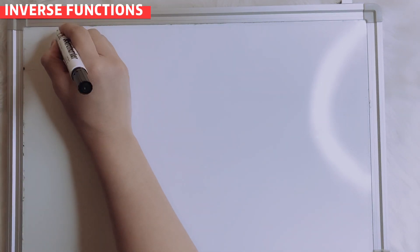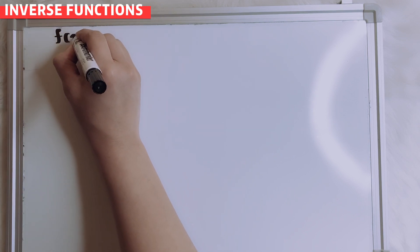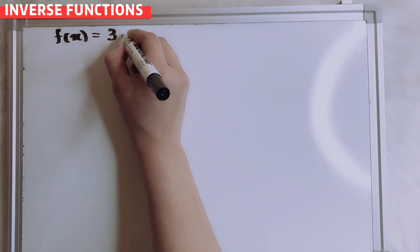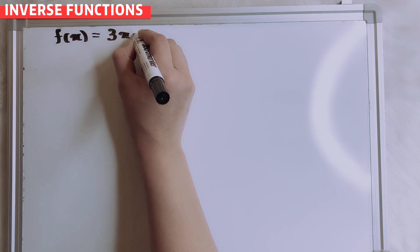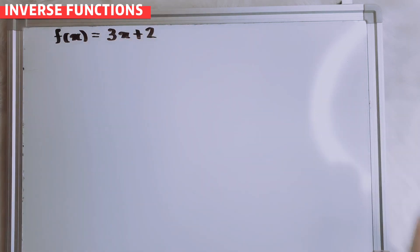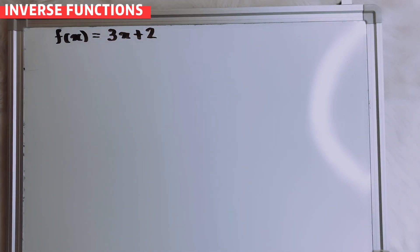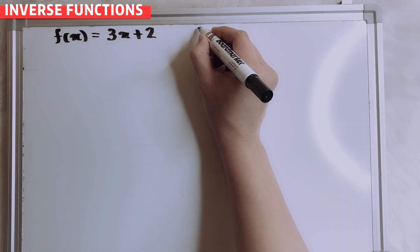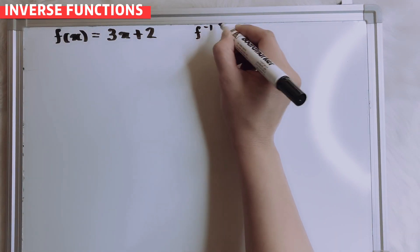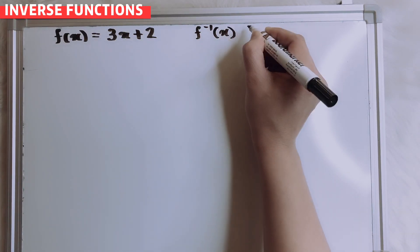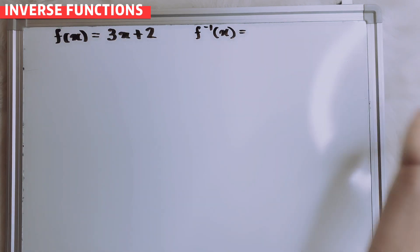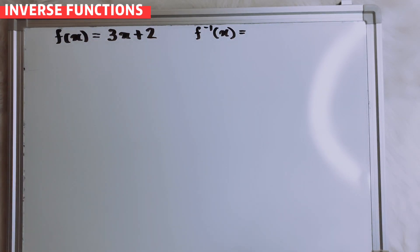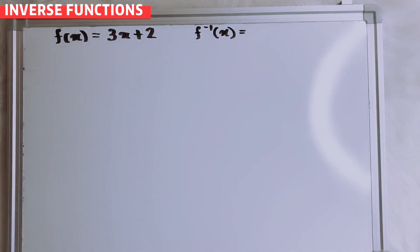I put here f(x) equals to 3x plus 2. So, the notation for the f inverse is f inverse x. So, what is the inverse function for 3x plus 2?